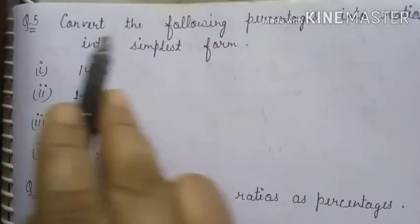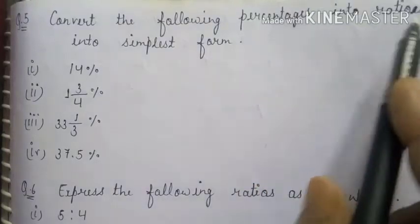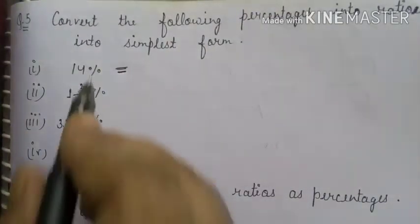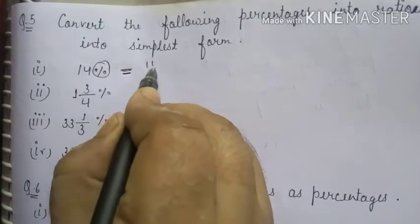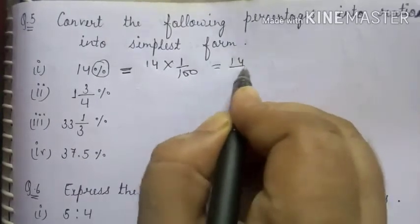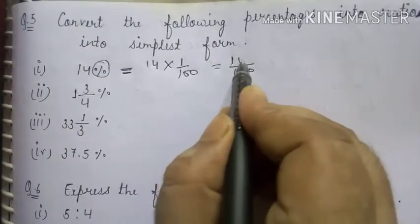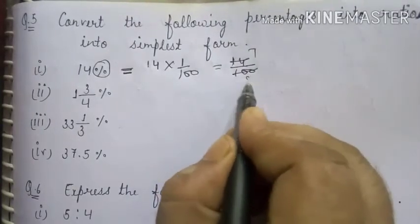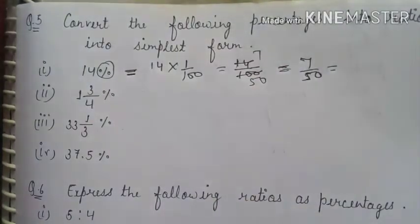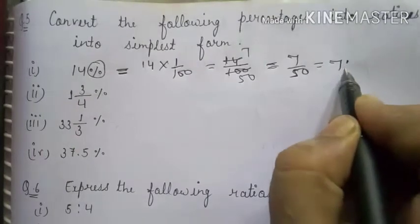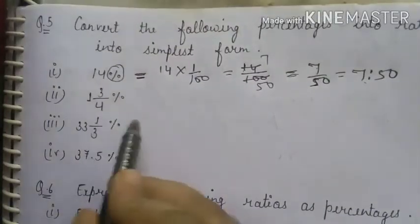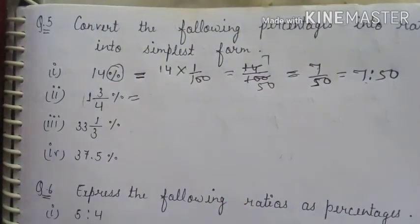Question 5: Convert the following percentages into ratios in simplest form. First, 14%: remove percent and multiply by 1 upon 100, giving 14 upon 100. Cancel by 2: 7 upon 50. Written as a ratio: 7 is to 50.